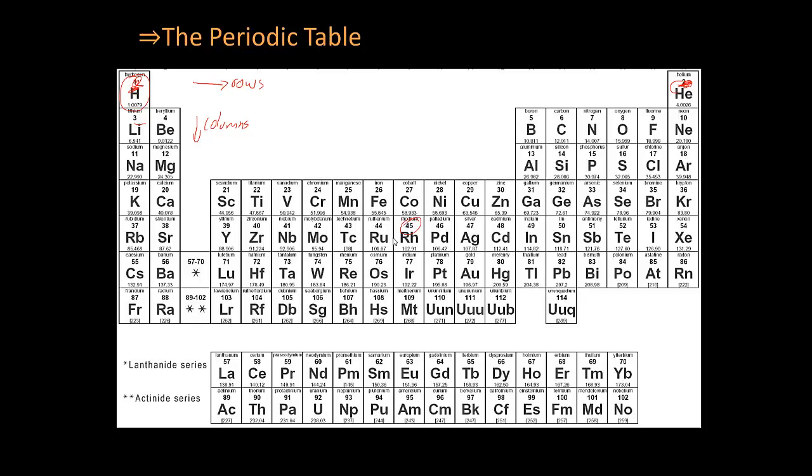Rhodium, down here, it has 45 protons. Gold, 79 protons. Cadmium, 48 protons. So if you can find the element on the periodic table, you already know some stuff about it.